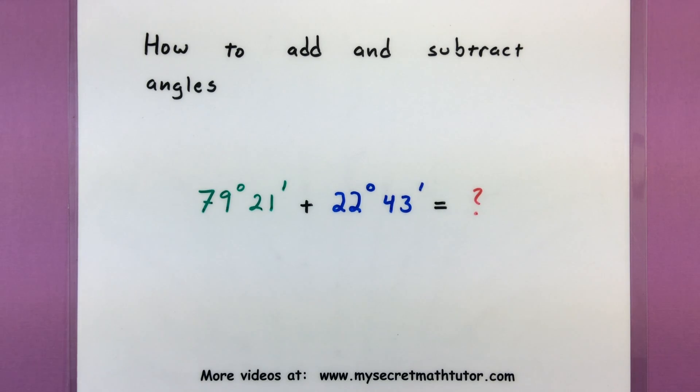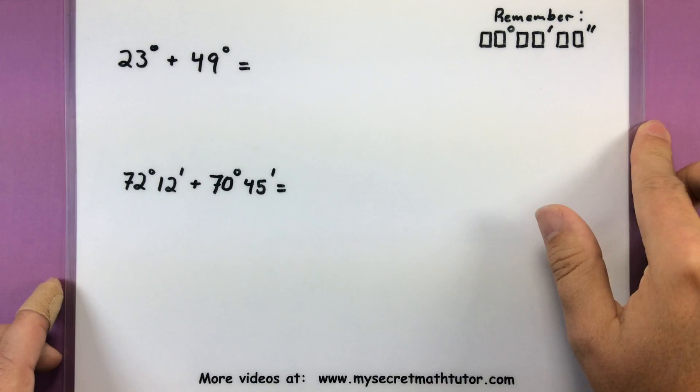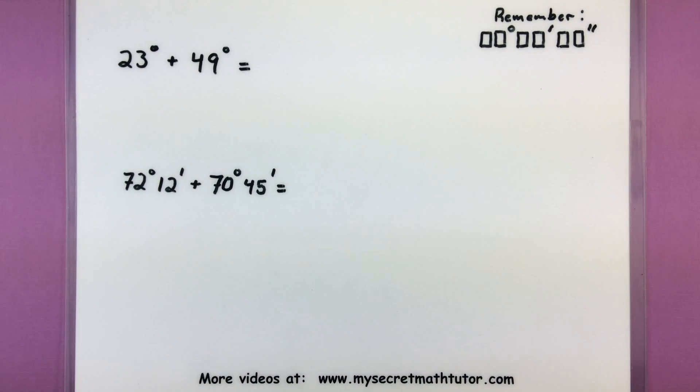Hey, how's it going? Today I want to help you figure out how you can add and subtract angles. Now what you'll see is that this usually isn't too much of a problem if your angles are simply written in degrees, but it does get a little bit trickier once they're written in degrees, minutes, and seconds. Then you got to do a little bit more work. So let's go ahead and move on to examples and you'll see what I'm talking about.